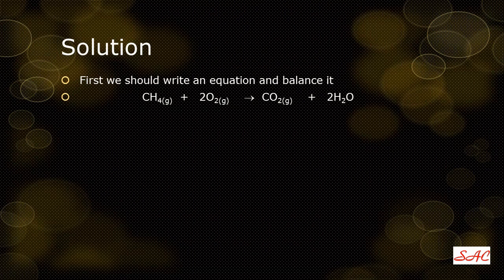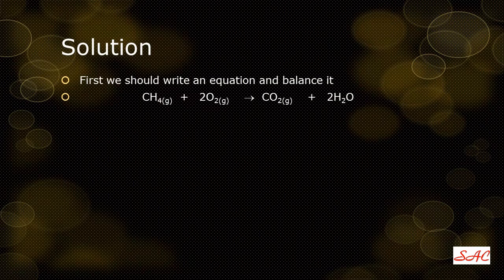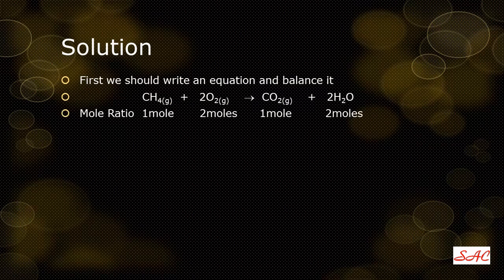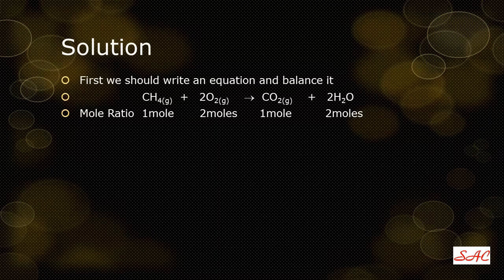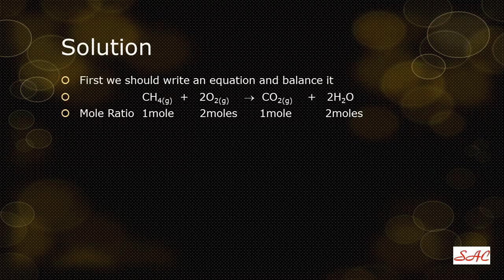Since the reaction is between methane and oxygen, we find that one mole of methane reacts with two moles of oxygen to produce one mole of carbon dioxide and two moles of water. The next thing to do is to write the mole ratio beneath the reactants and products as a method for solving the problem. So beneath methane (CH₄) I put one mole, beneath oxygen two moles, beneath carbon dioxide one mole, and beneath water two moles.